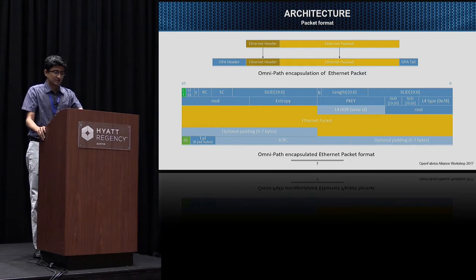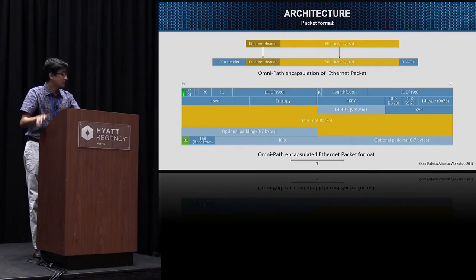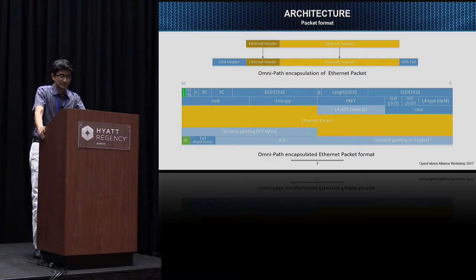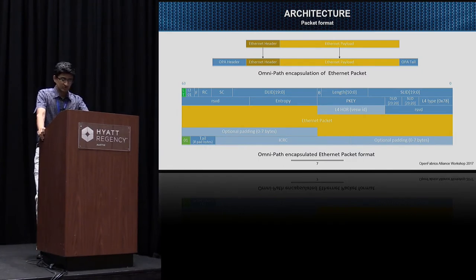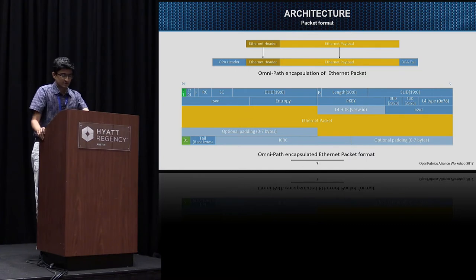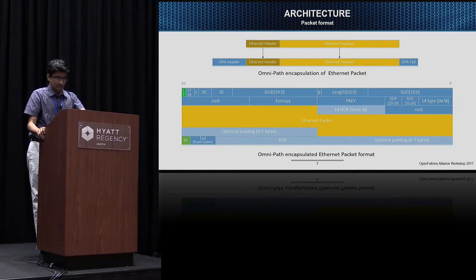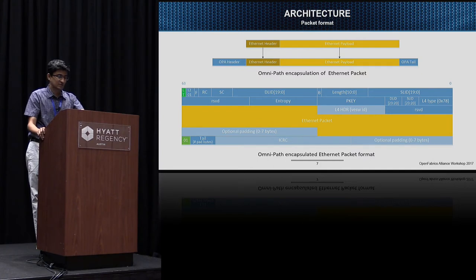We mentioned that Ethernet packets are encapsulated within an Omnipath packet. The top diagram shows how this is done: we retain the Ethernet header and payload as-is from the Ethernet packet, append an Omnipath header, and put it on the wire. The bottom diagram shows the Omnipath encapsulated Ethernet packet in more detail. In the middle is the Ethernet packet, and on top is the Omnipath encapsulated header. The encapsulating host has all the information required to do the encapsulation, provided by the Ethernet manager software.